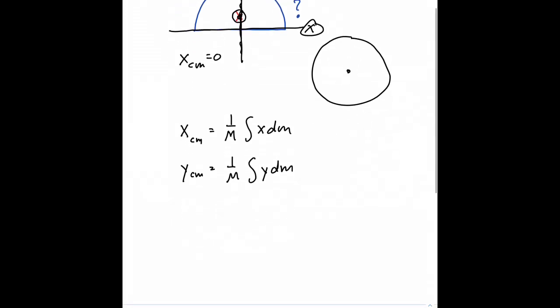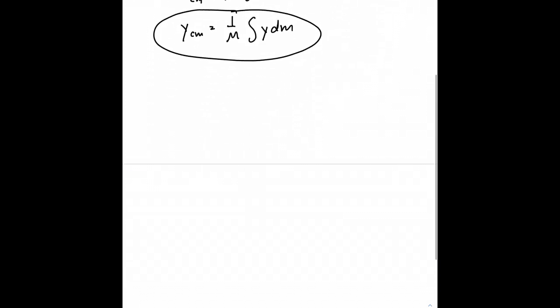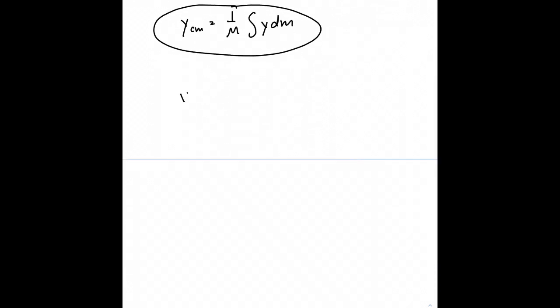So we're really just trying to figure out what's the location of the center of mass along the y-axis. So here's the question. How do I picture what my element of integration looks like? What do I mean when I say dm?